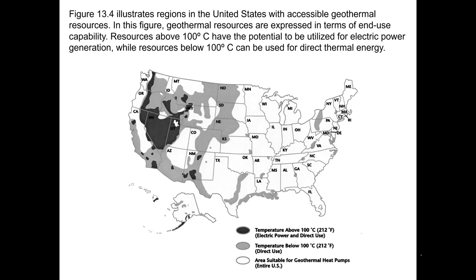This figure from your book illustrates regions in the United States with accessible geothermal resources. Geothermal resources are expressed in this figure in terms of end-use capability. Resources above 100°C have the potential to be utilized for electric power, while resources below 100°C can be used for direct geothermal energy.